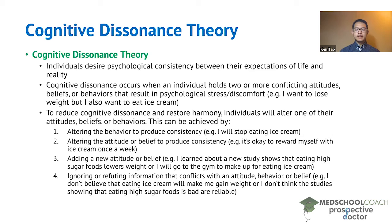Finally, the individual can also ignore or refute information that conflicts with an attitude, behavior, or belief. So this could be a person that says, I don't believe that eating ice cream will make me gain weight — they just completely ignore or deny conflicting information. Alternatively, the person can also say, I don't think the studies showing that eating high sugar foods is bad are reliable. So if they are refuting information that goes against their beliefs, that can also produce harmony and reduce dissonance for the individual.